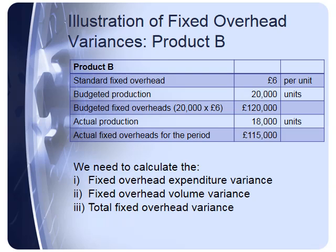Let's have an illustration. Here we have Product B, with a standard fixed overhead of £6 per unit. We originally budgeted to produce 20,000 units, so our original budgeted fixed overheads were 20,000 units at £6 each, giving £120,000 total. But we actually produced 18,000 units, and the actual fixed overheads were £115,000. We're going to calculate the fixed overhead expenditure variance, the fixed overhead volume variance, and the total fixed overhead variance.